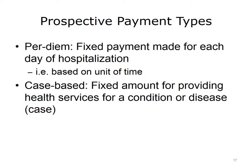For example, two patients with pneumonia are admitted to the hospital on the same day. The first requires five days of hospitalization and the second requires nine days. With per diem payments, the hospital receives five times the per diem rate for the first patient and nine times the per diem rate for the second. Under case-based payment, the organization receives the same amount for both patients, even though one required additional days of care.